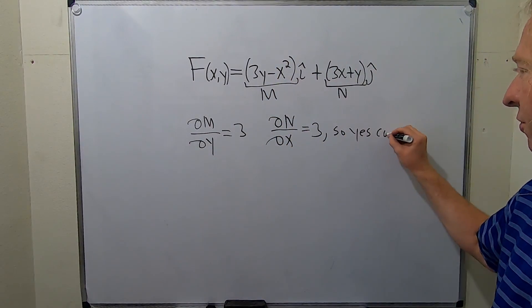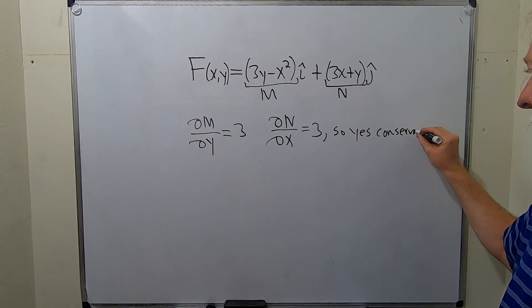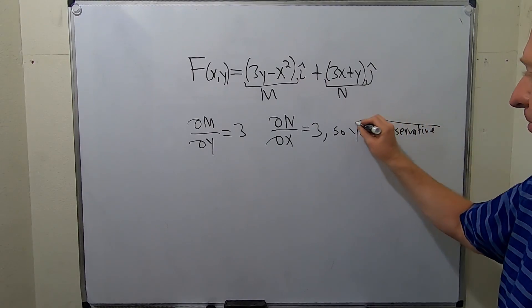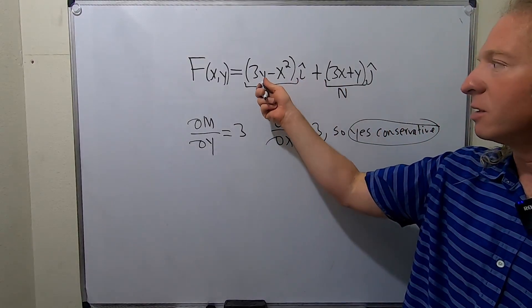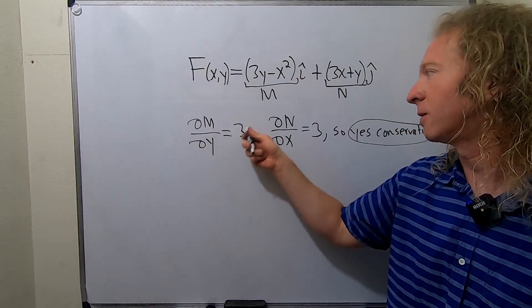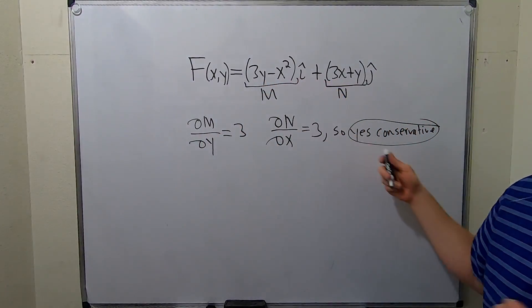So yes, conservative. Again, recap: Check it's conservative. You call this M, you call this N. Compute ∂M/∂Y, see what you get. Compute ∂N/∂X, see what you get. If they're the same, it's conservative.